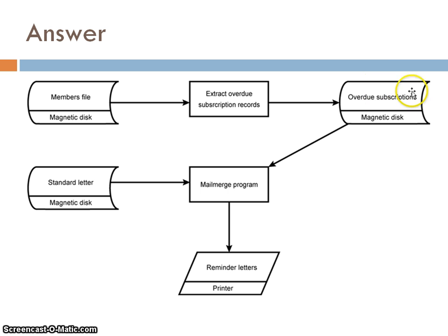This is then stored in a new store of overdue subscriptions, which is on the magnetic disk. A mail merge program is used and takes a standard letter and uses the extracted overdue subscriptions to produce reminder letters that are sent to a printer.